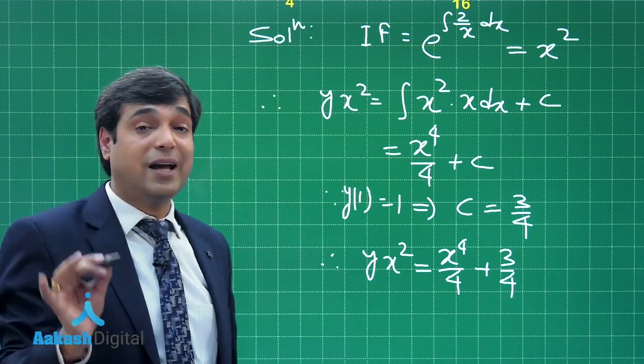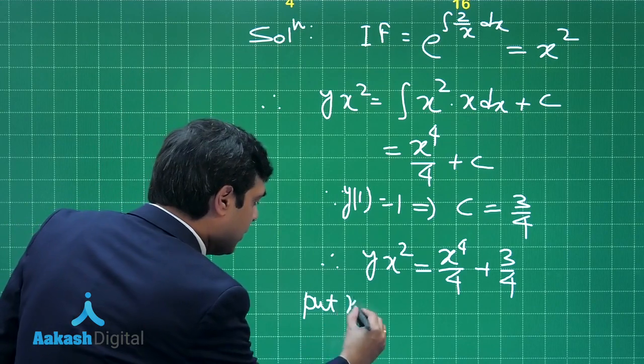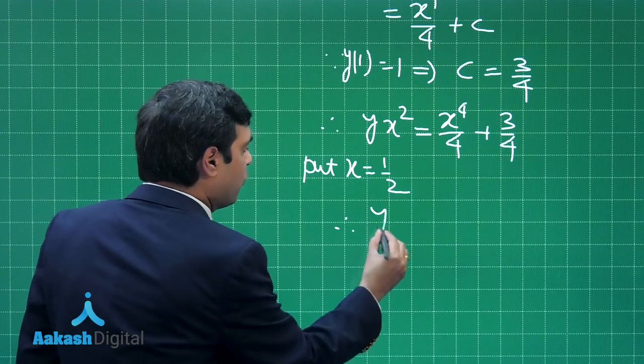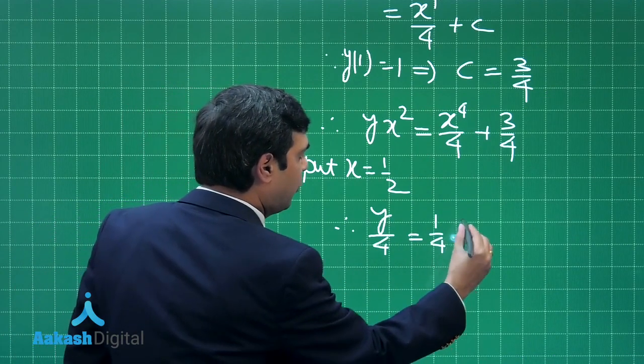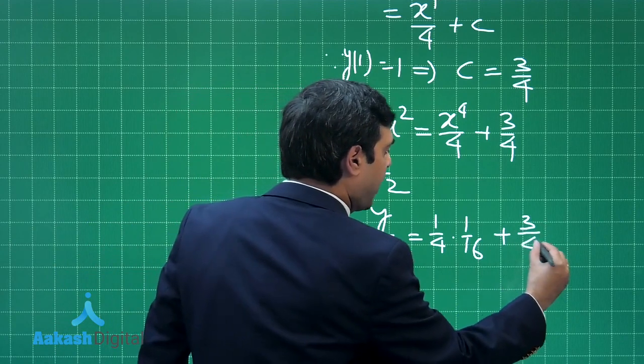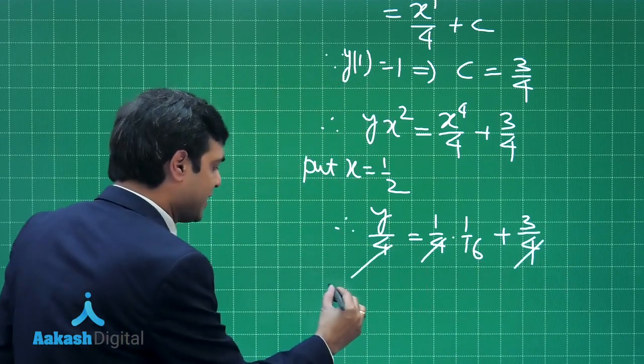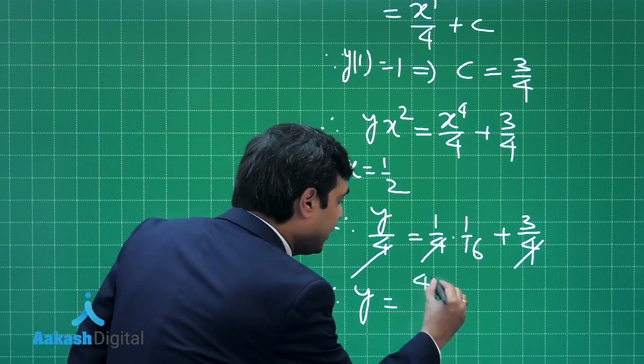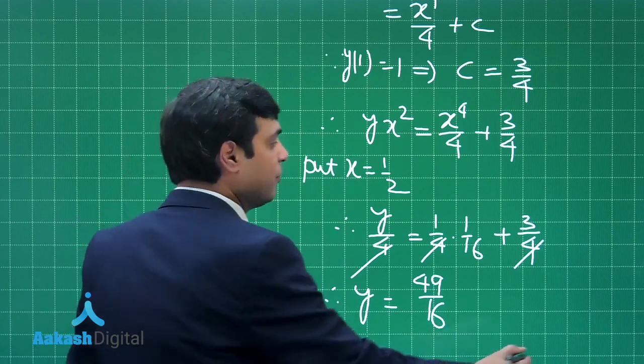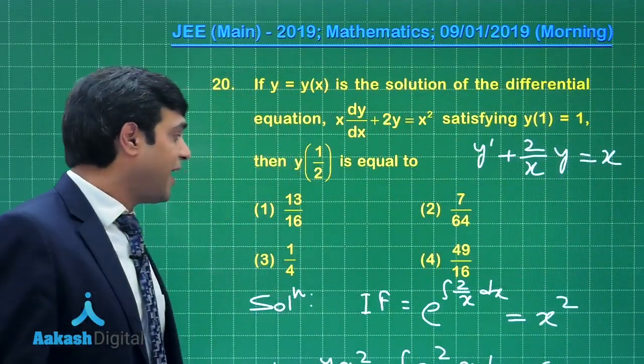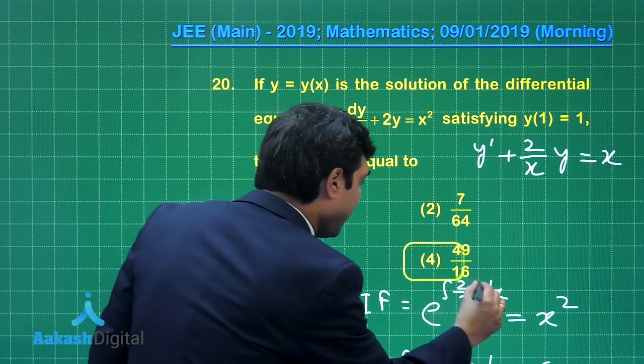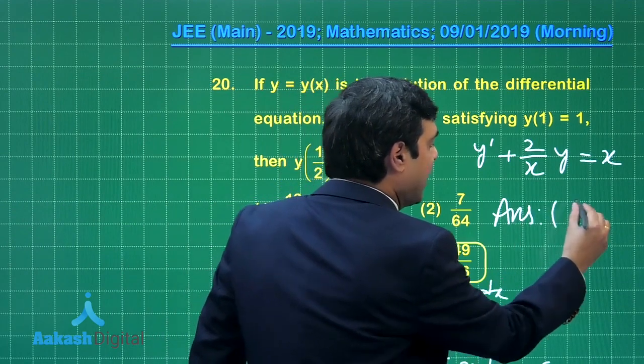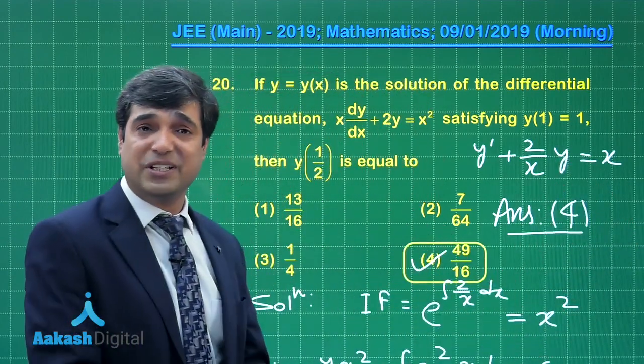Now question is saying find y(1/2). Put x = 1/2. When you substitute here x = 1/2, you get y/4 = (1/4)(1/16) + 3/4. This 4 can be cancelled and we can say y = 3 + 1/16, or 49/16. Let us see which one of the given options is correct. 49/16, we can see it is mentioned here as option number 4. So just mark and write down the correct answer as 4. I am sure this question from differential equation is clear.